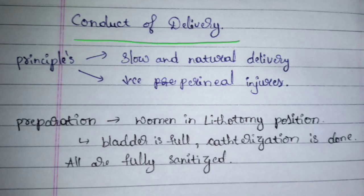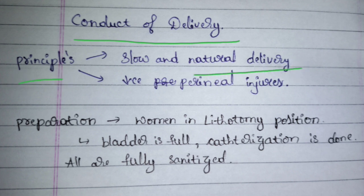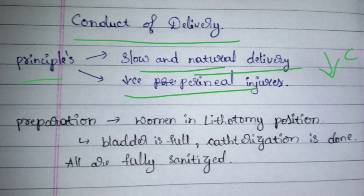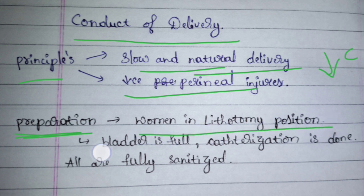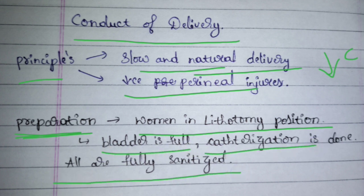Conduct of delivery: we maintain sanitizing measures, provide emotional support, and record the partogram. The principle is to perform natural delivery — we try to reduce C-sections, increase the rate of slow and steady natural deliveries, and decrease perineal injuries and infections. At the time of delivery the woman is given the lithotomy position. If the bladder is full, catheterization is provided. Everything should be followed in a sanitized way.